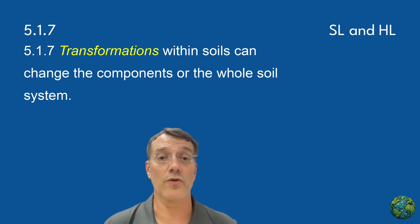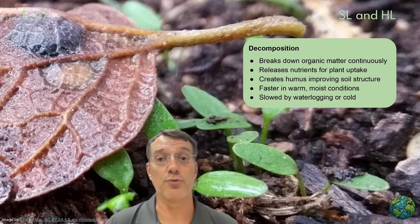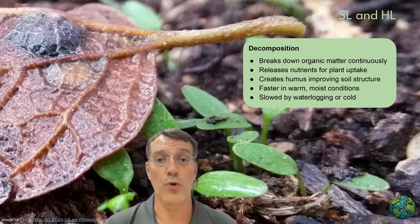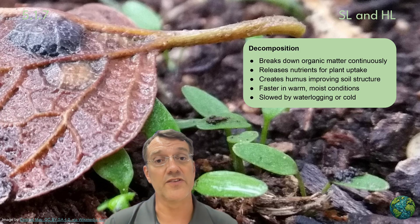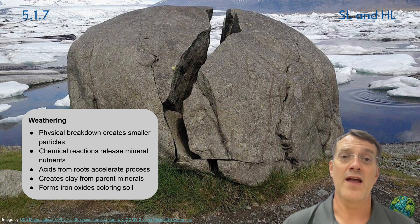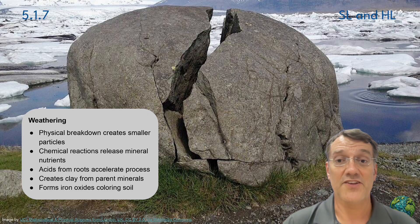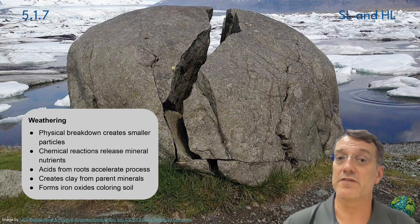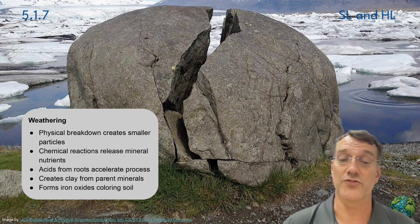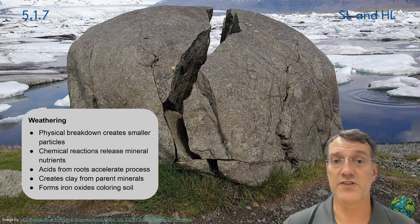Transformations within soils can change the components or the whole soil system itself — these chemical and biological changes are what make soil a really dynamic system. Decomposition continuously breaks down organic matter, releasing nutrients for plant uptake and creating humus that improves soil structure. This process is faster in warm, moist conditions, but slows down significantly in waterlogged or cold environments. Weathering creates smaller particles through physical breakdown and releases mineral nutrients through chemical reactions; acids from roots accelerate this process, creating clay from parent minerals and forming iron oxides that give soil its color. You should be able to distinguish between weathering and erosion: weathering is a slow process that contributes to soil development over many years, while erosion is a lot faster and generally a destructive process that removes soil from a site.